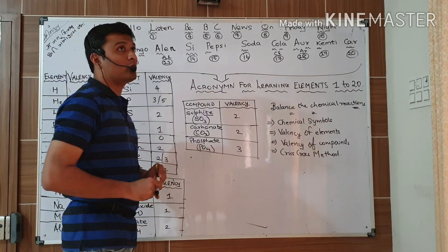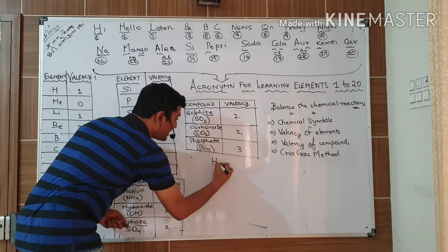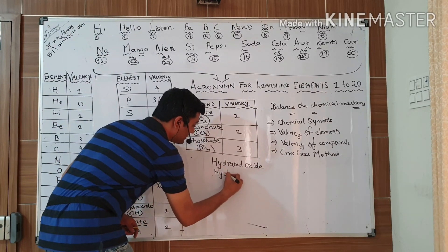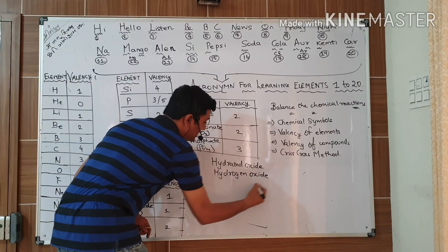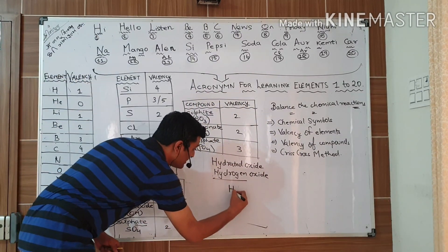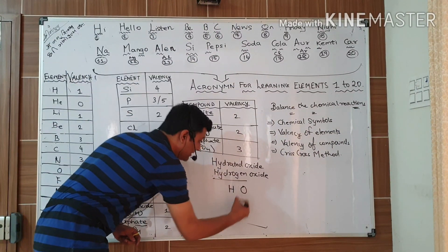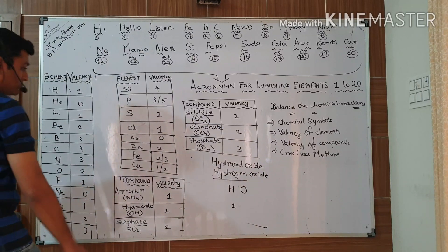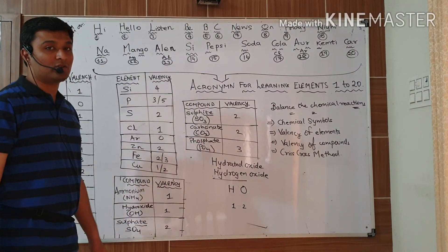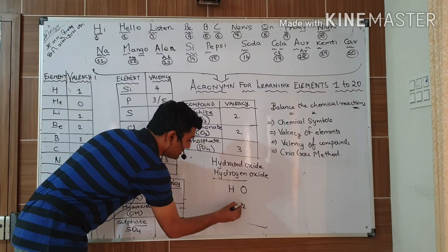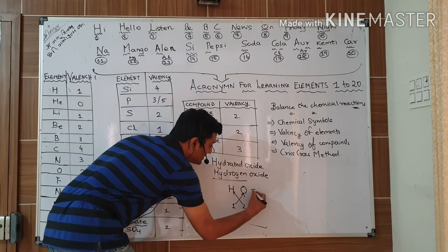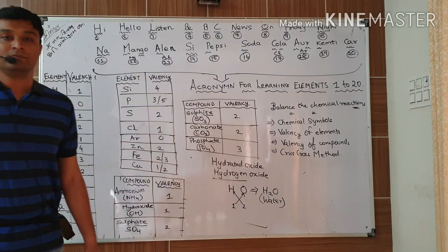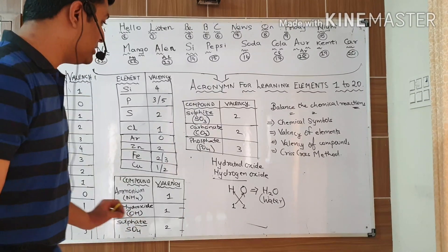9th standard students are very much familiar about compound valency and criss-cross method, but still some students are confused with chemical symbols. So let's start. If I am telling you give me formula of hydrogen oxide. Hydrogen symbol is H, oxide means oxygen so I will write O. What is valency of hydrogen? 1. Valency of oxygen? 2. So using criss-cross method, give this 2 coefficient to hydrogen and 1 to oxygen. It changes to H2O and another name of H2O is water.